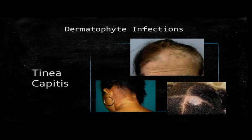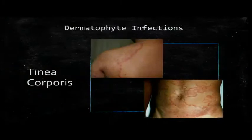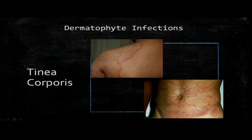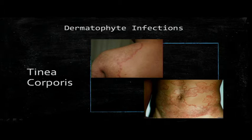Tinea capitis affects the scalp and you can also get alopecia with it, which should resolve with treatment. Tinea corporis refers to the parts of the body not covered by the other named tinea forms — everywhere except the head, groin, hands, and feet. You'll notice erythematous edges with central clearing and scaling on the edges. Patients complain of itching and it's obtained via skin-to-skin contact or fomites like towels and floors.